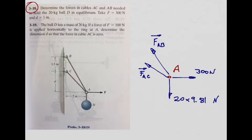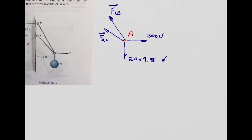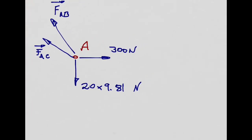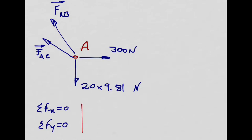Now we need to write the equilibrium equations for a particle. Those are: summation of forces in the x-direction equal to zero, and summation of forces in the y-direction equal to zero. In a two-dimensional problem, this is what we have. Alternatively, you can add all the vectors. I'm going to use red color to show this. We need a coordinate system — x-direction and y-direction — as we discussed last Tuesday.